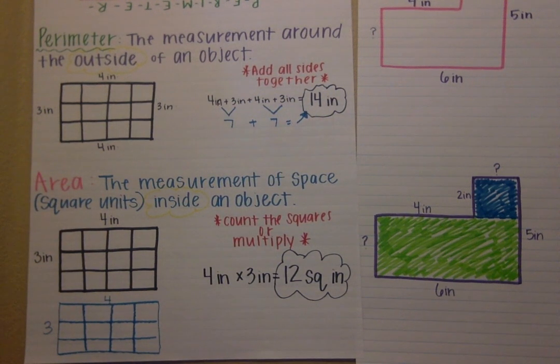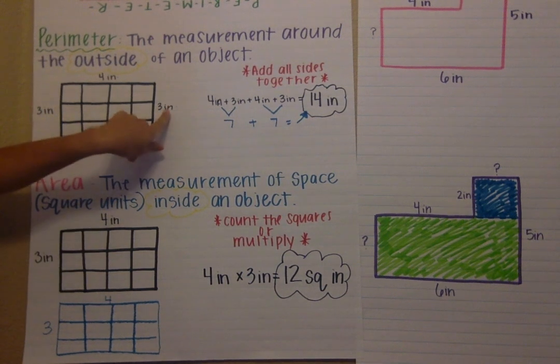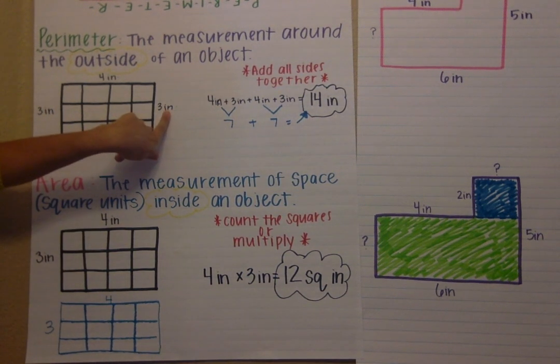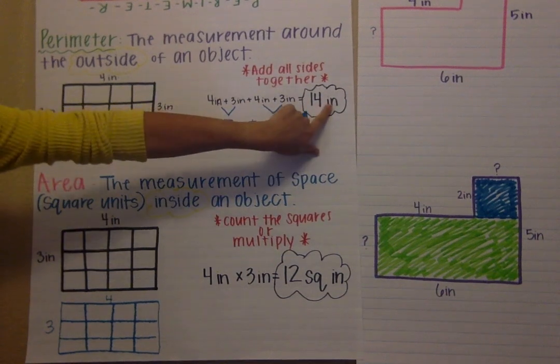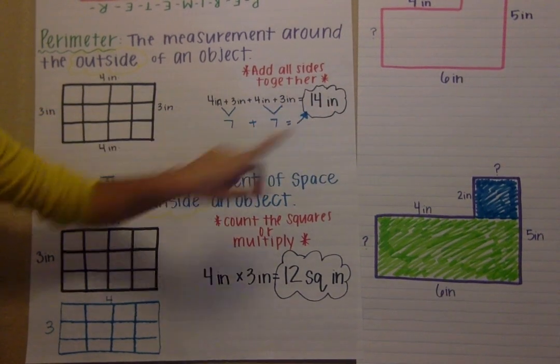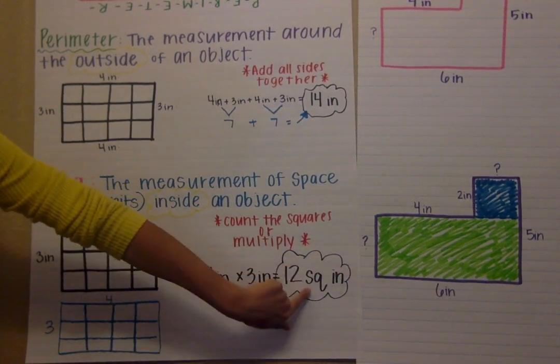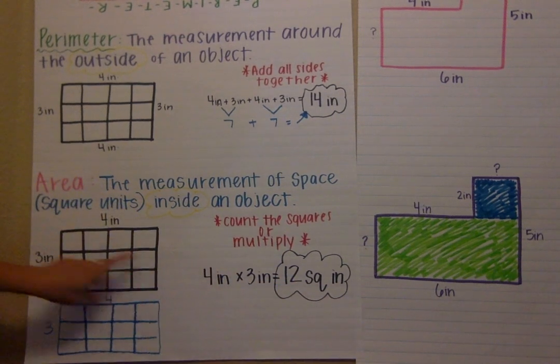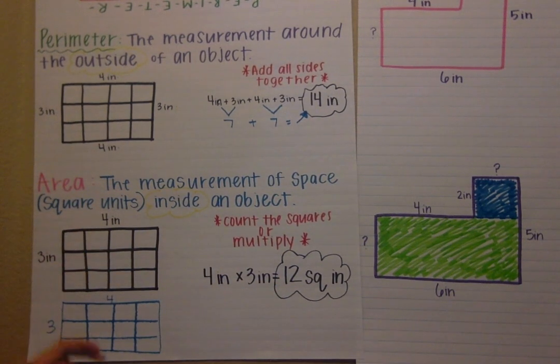It's also really important to remember that when we are labeling perimeter you only label it with what you see. This one was labeled in inches so my answer is only in inches. For area we answer in square inches because we're counting the squares inside of our shape.